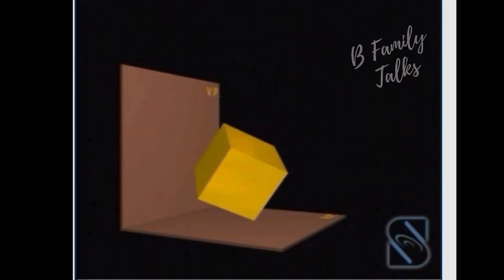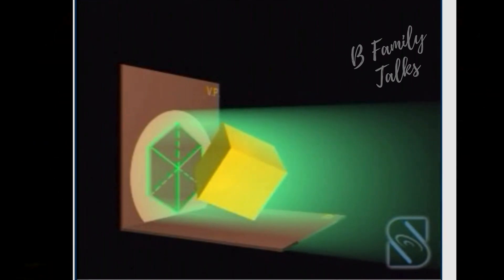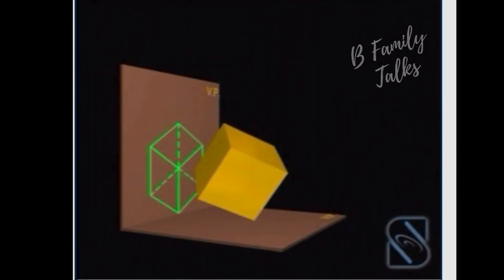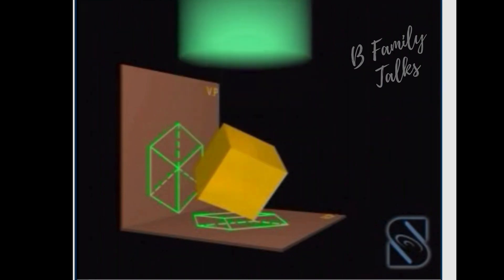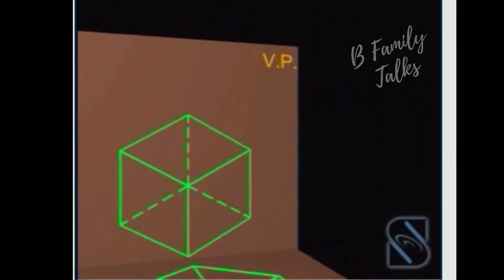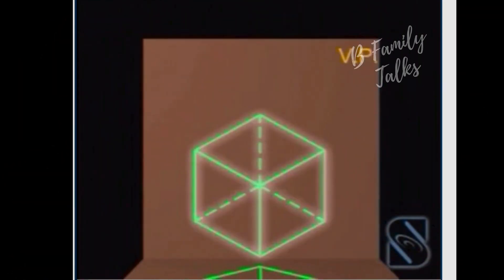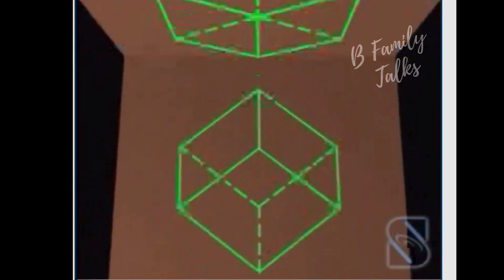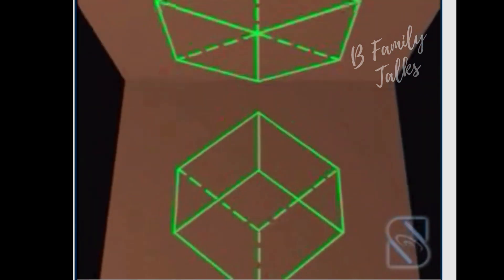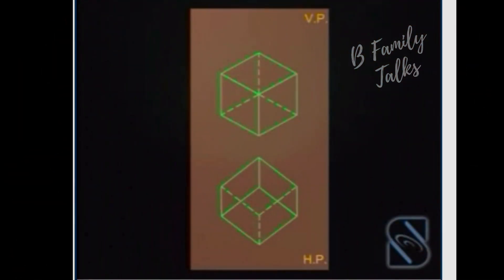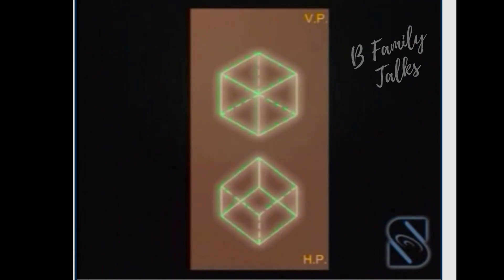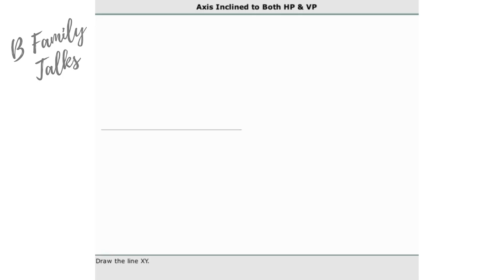Position the solid in the first quadrant. Look at the solid from the front to obtain the front view as shown in the figure. Look at the solid from the top to obtain the top view as shown in the figure. Rotate the horizontal plane 90 degrees clockwise to get the projection. Now the required projections are obtained.